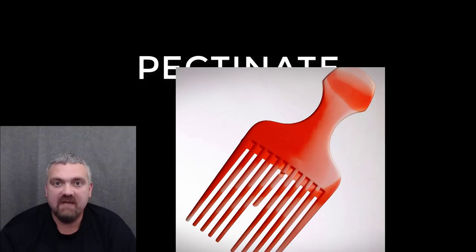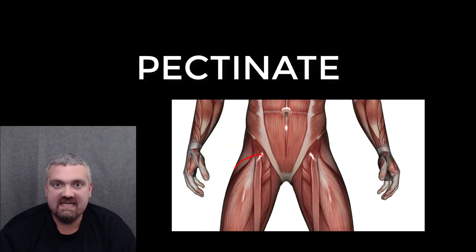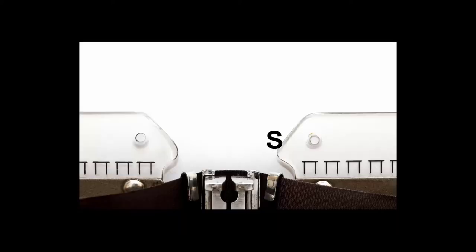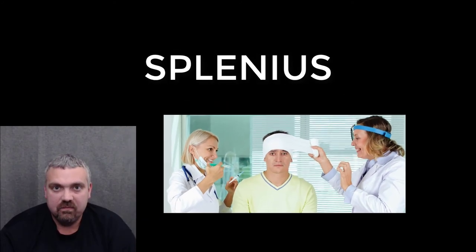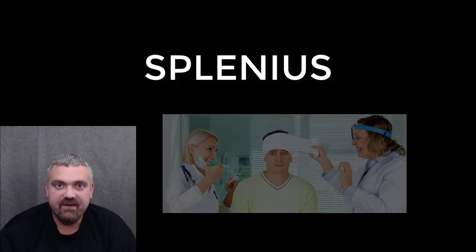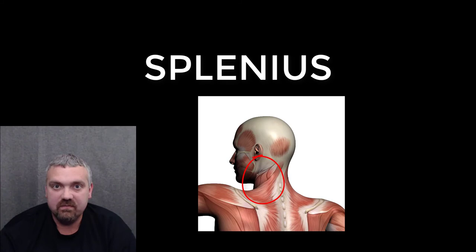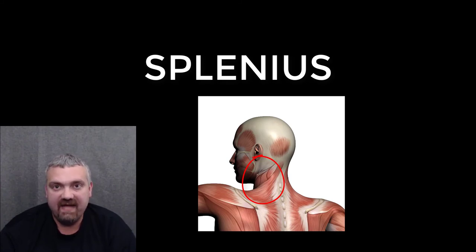Pectinate means comb-like, so the pectineus muscle of your groin — one of your hip adductors — would be the key example. The term splenius means bandage; the splenius capitis muscle is the key example, a bandage-shaped muscle that wraps around the back of your head and neck. Capitis meaning head.